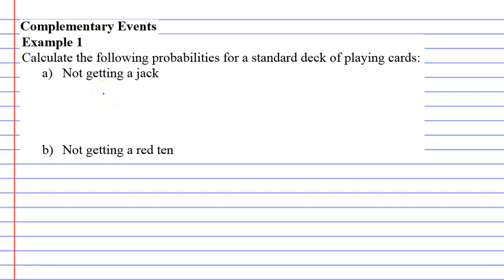Okay, so probability of getting a jack - there's four jacks in a deck of cards, so there's a 4 out of 52 chance, which simplifies to 1 over 13. Which means that the probability of